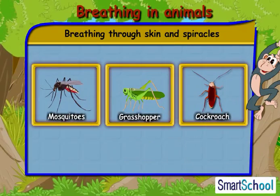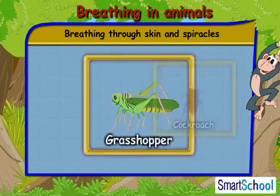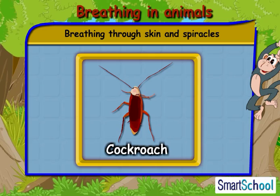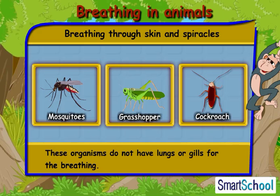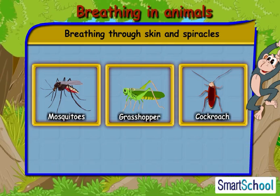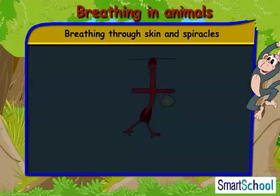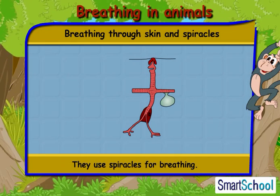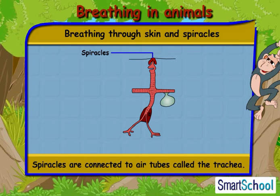Now let us understand how organisms like mosquitoes, grasshoppers, ants, and cockroaches breathe. These organisms do not have lungs or gills for breathing, and their blood does not carry oxygen. They use spiracles for breathing. Spiracles are connected to air tubes called the trachea.